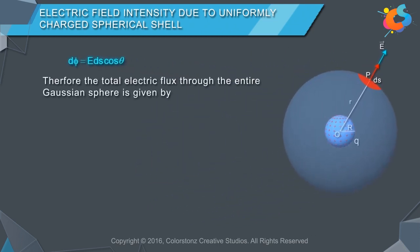Therefore, the total electric flux through the entire Gaussian sphere is given by φ = ∫dφ, or φ = ∫E ds cos θ.